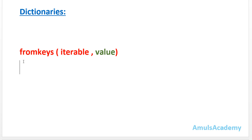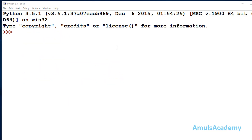The fromkeys method will return a dictionary. If you are confused don't worry, we will take examples so we will get a clear picture. First, for example, we will take one list and see how to create a dictionary using the fromkeys method.